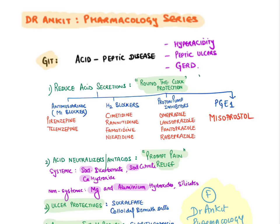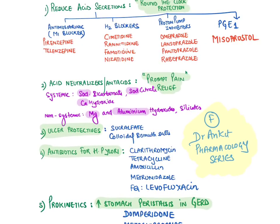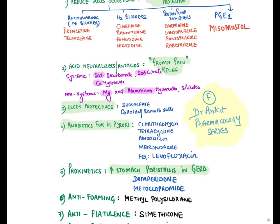The most effective drug is the proton pump inhibitor. They end with the word 'prazole', like omeprazole and lansoprazole. Then we use one prostaglandin analog, PGE1 — that is misoprostol — given in NSAID-induced peptic ulcers. The next class is acid neutralizers, also known as antacids. They are basic drugs that chemically react with HCl present in the stomach and provide prompt pain relief. Systemic antacids, which may absorb into blood, are salts of sodium and calcium. Non-systemic antacids, which minimally get absorbed, are salts of magnesium and aluminum.